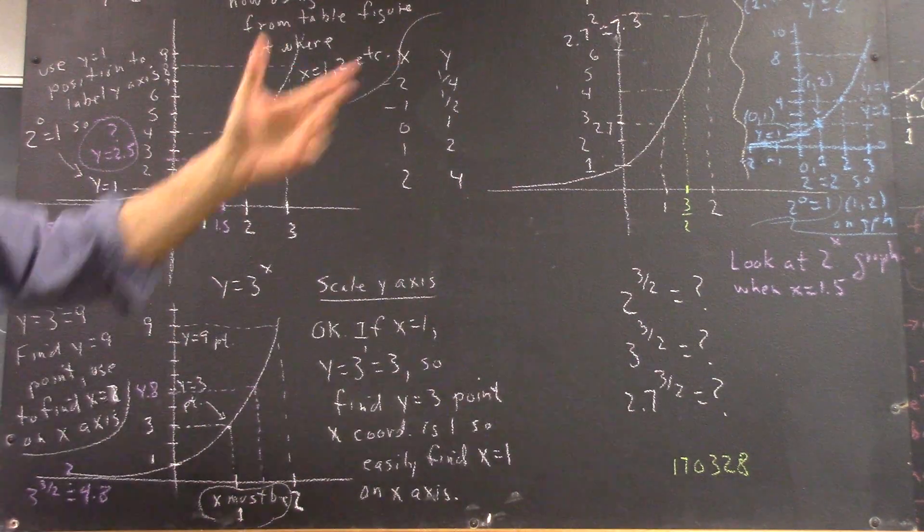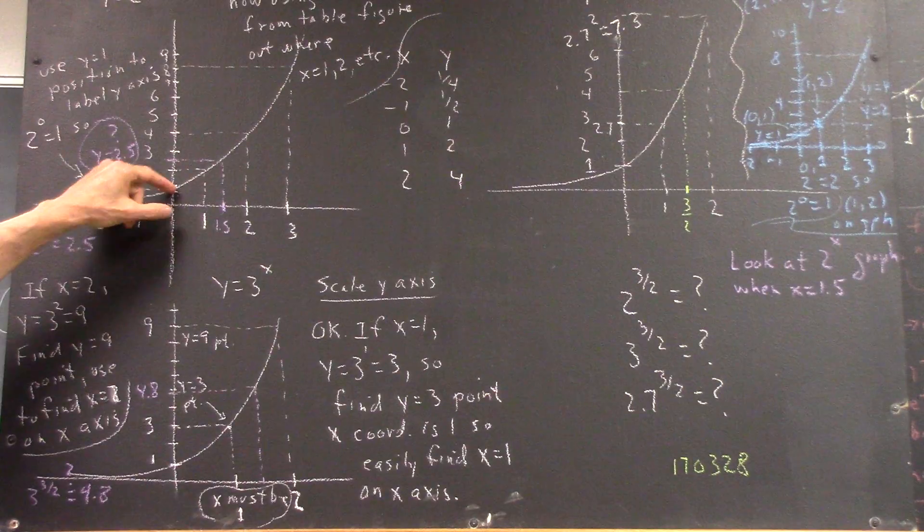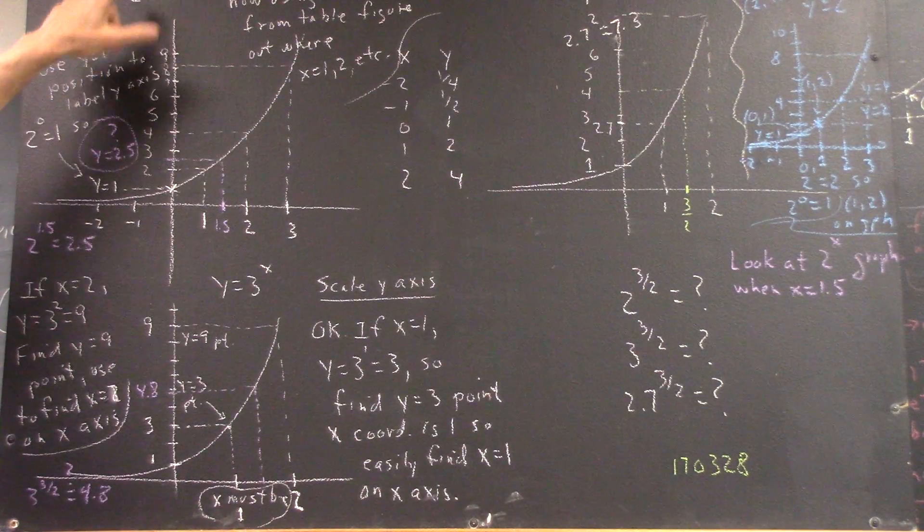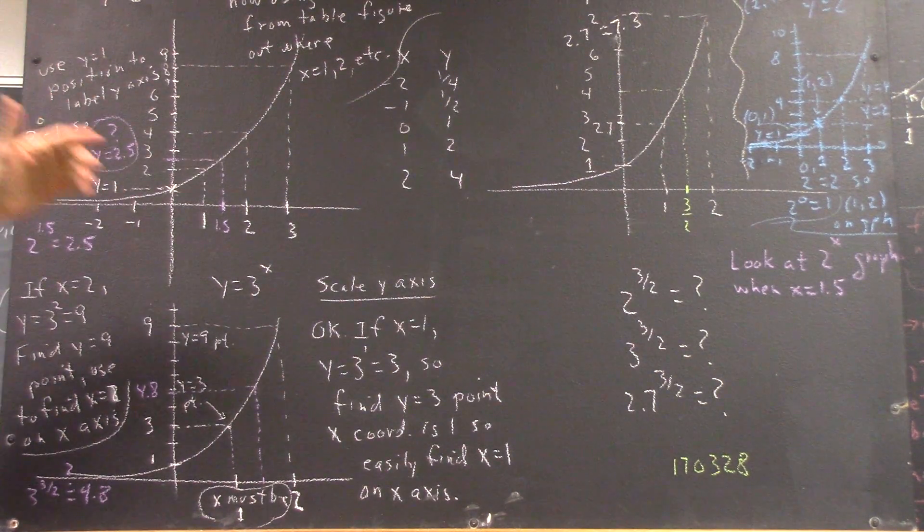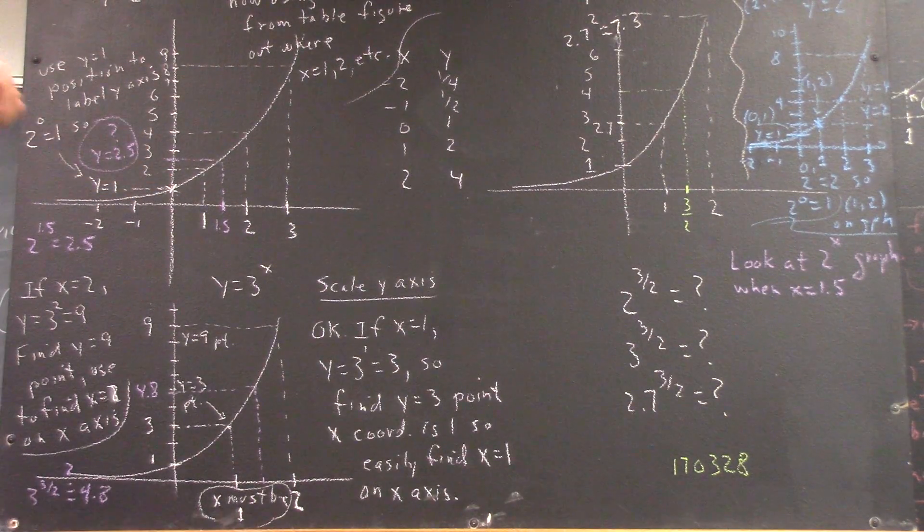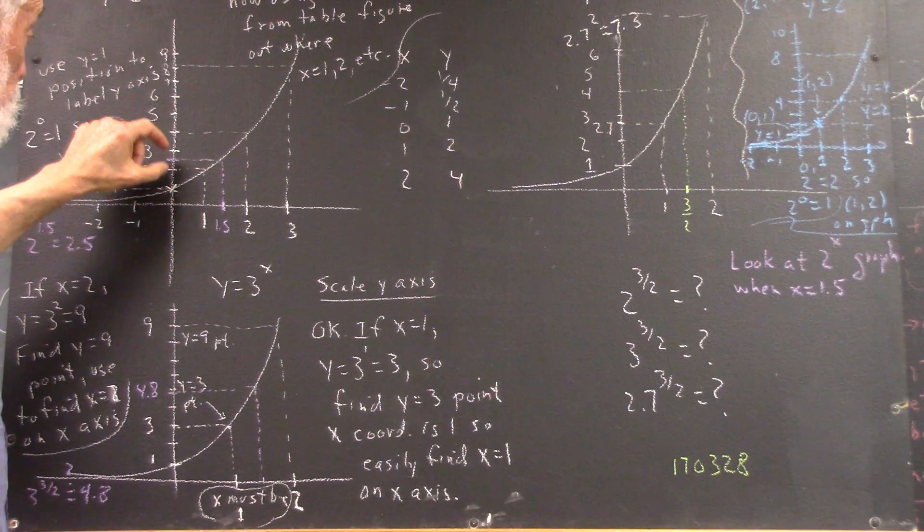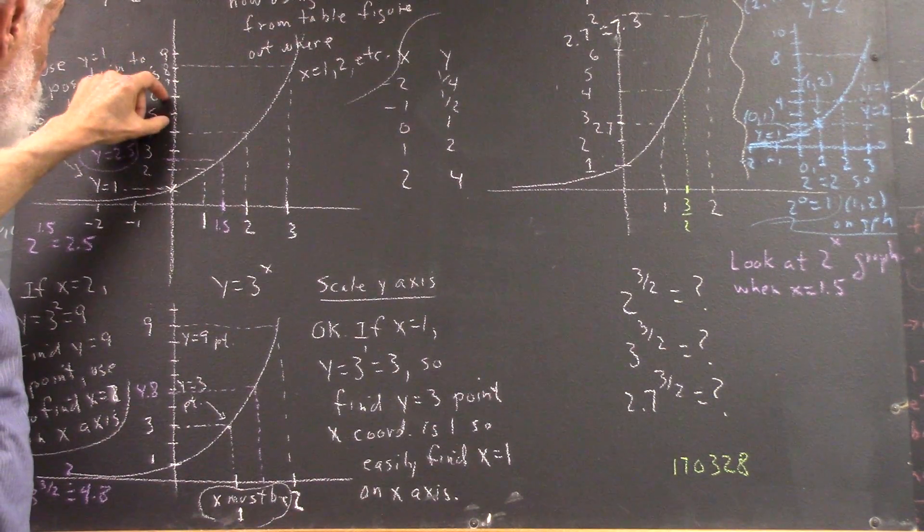And we did the same thing, just what I did over here. Found the y equals 1 point, which is the y-axis because 2 to the 0 is 1, so the point has to lie on the graph. So we know this point, which tells us the unit of our y-axis, so we mark the y-axis off in those units.